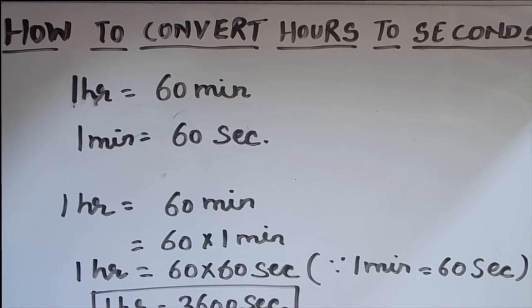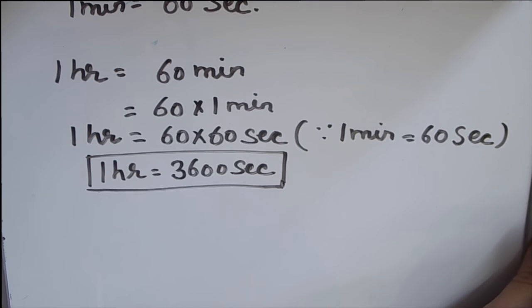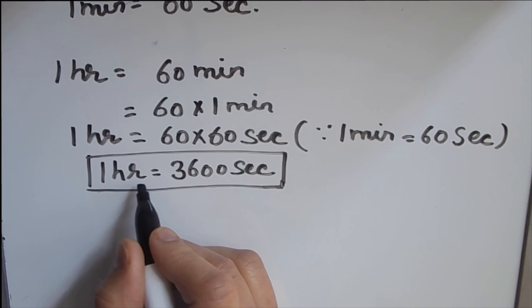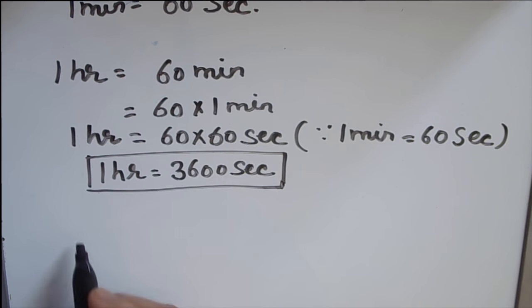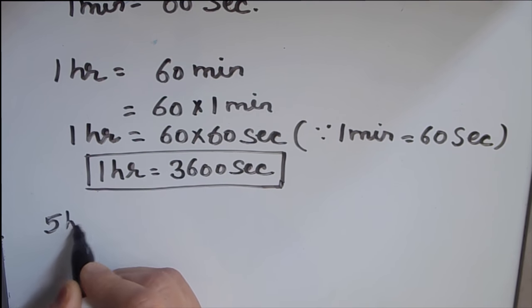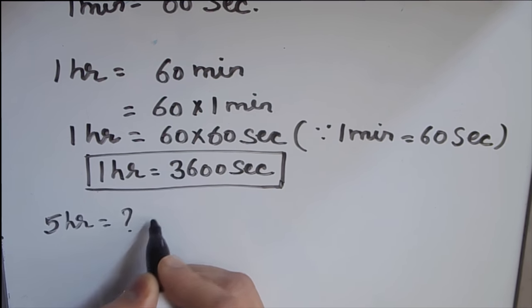So to convert from hours to seconds, what we need to do is we need to multiply the number of hours by seconds. Let's take an example. Suppose we have to convert five hours to seconds. We need to find out how many seconds are there in five hours.